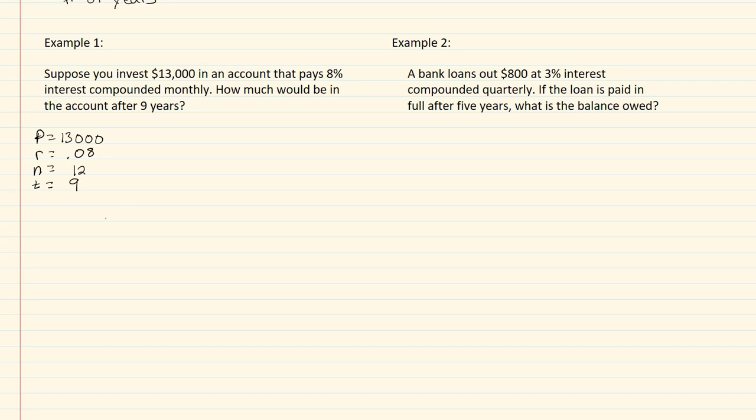So when you put this in your calculator, you're going to enter it like this. You're going to have thirteen thousand parenthesis, one plus our rate which is point zero eight, divided by our n which is twelve. And then you'll use the little caret key on your calculator, and then you'll use a parenthesis again, and it's going to be twelve times our nine.